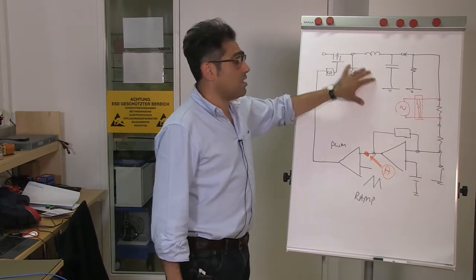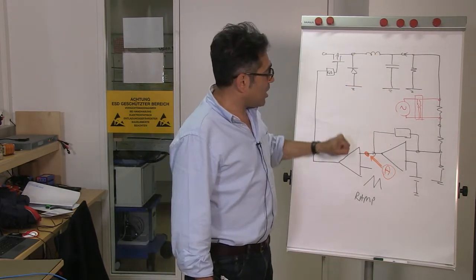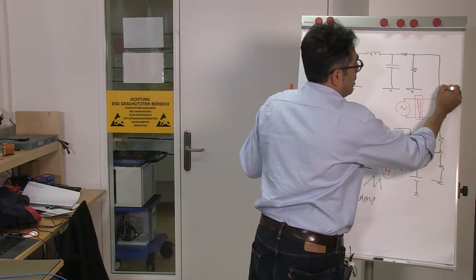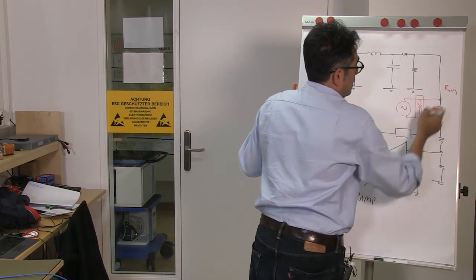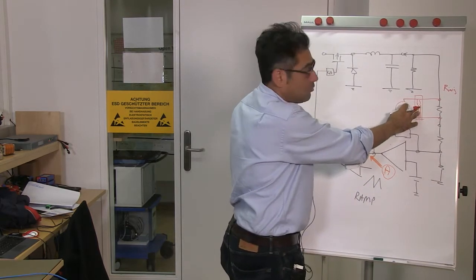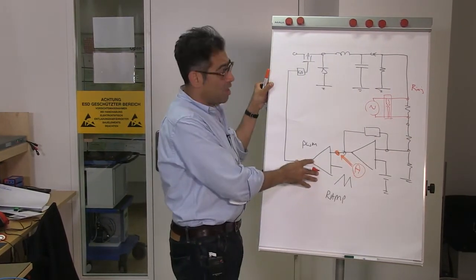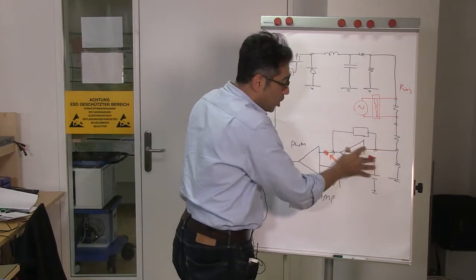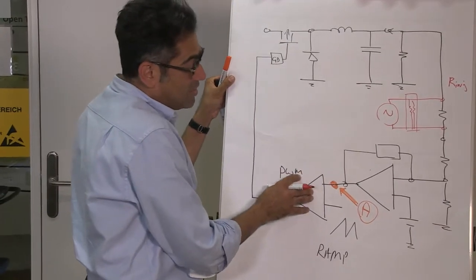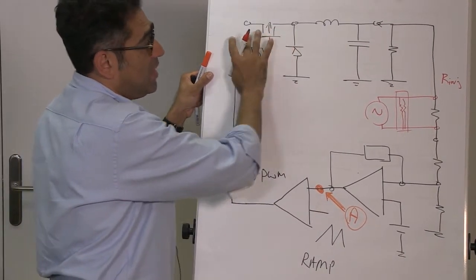Here I have drawn a power supply, a simple buck converter. It really doesn't matter which. Here is my injection resistor. My Bode 100 is here, injecting across the injection transformer. Then that goes through, let's for simplicity at first say, an analog power supply. I have got my compensator, and then my compensator goes to the comparator whereby it generates the PWM. The PWM then drives the MOSFET and the loop is closed.